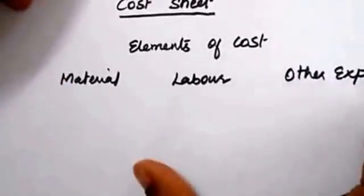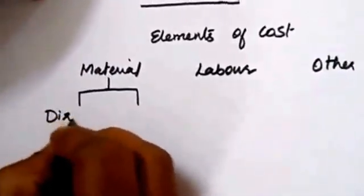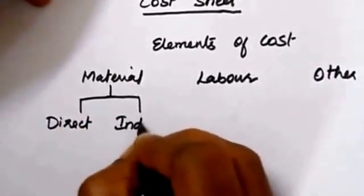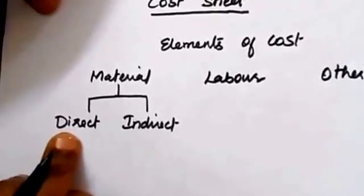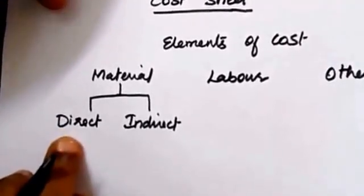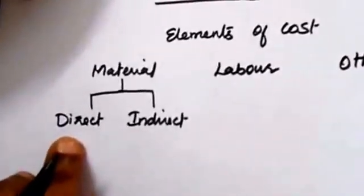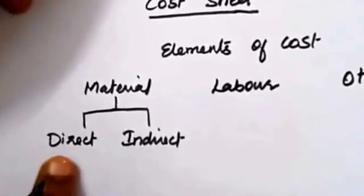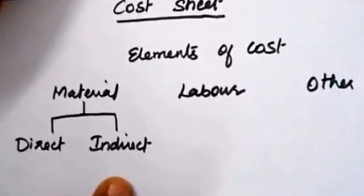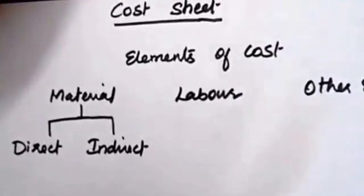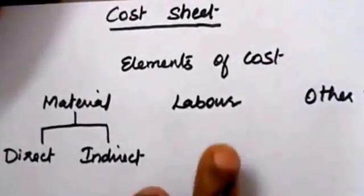Material is also classified into two categories: direct material and indirect material cost. Direct material cost means the amount paid at the time of acquiring raw material required for production. Indirect material cost is material that is not directly involved in production but is still an important element of cost.